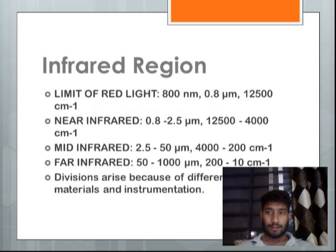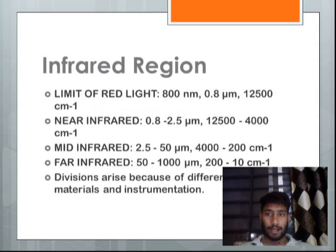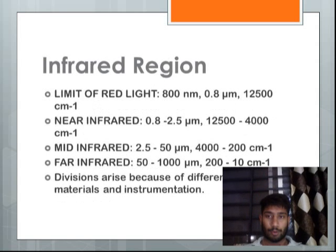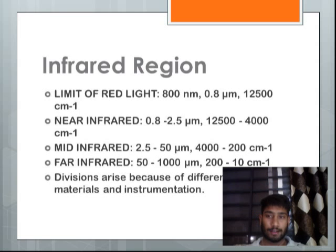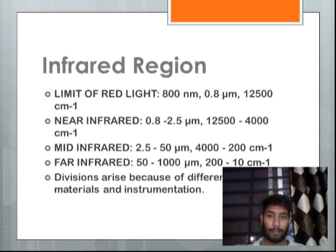In the infrared region, the limit of red light is up to 800 nanometers. In near infrared, it is 0.8 to 2.5 micrometers. Mid infrared is from 2.5 to 50 micrometers, and far infrared is from 50 micrometers to 1000 micrometers.